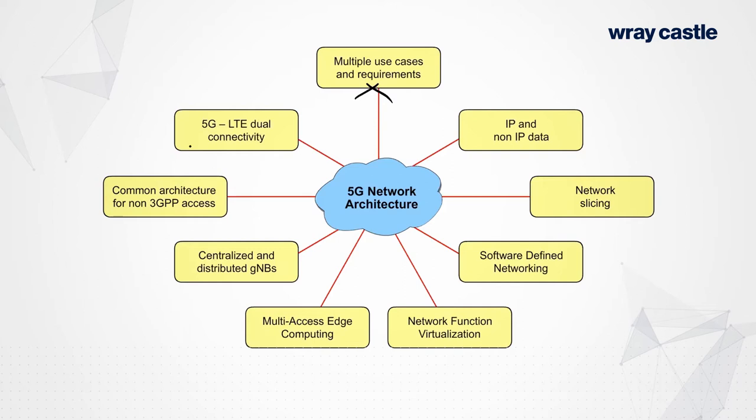They will include things like 5G and LTE interworking. Dual connectivity, I suppose, is one way of referring to that — option threes, option fours, option sevens that we will come back to. It's kind of all about dual connectivity in the network, but that also leads to a nice graceful architecture where you can evolve towards a fully standalone network without necessarily pressurizing the population of mobile devices to upgrade immediately.